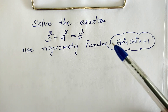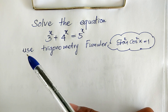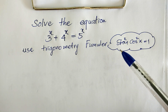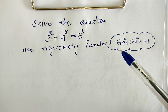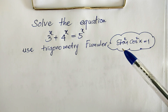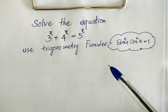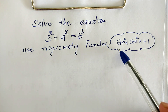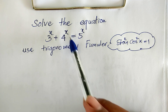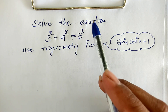Okay, for this equation — in other videos I use different methods — and now I use a trigonometry formula. Okay, now we have 3 power h plus 4 power h equal 5 power h.